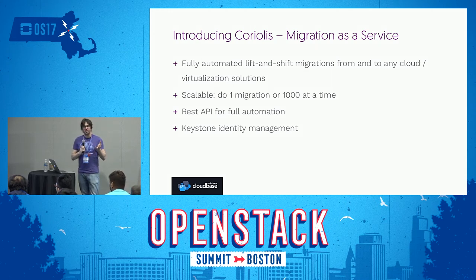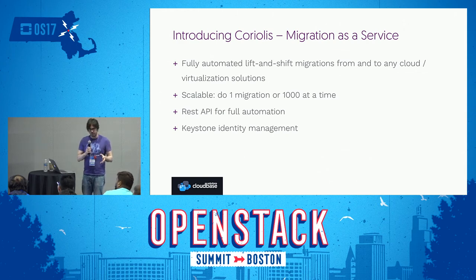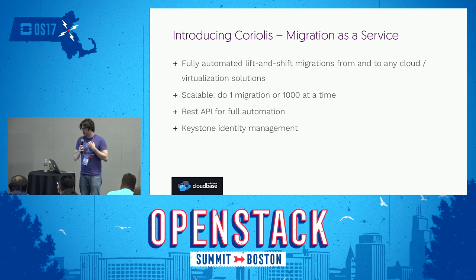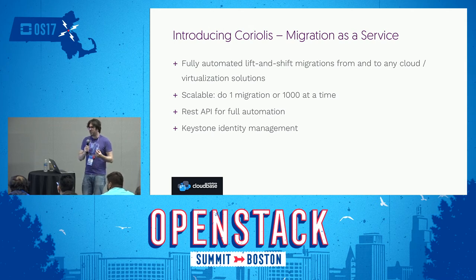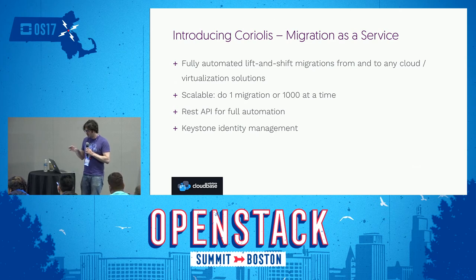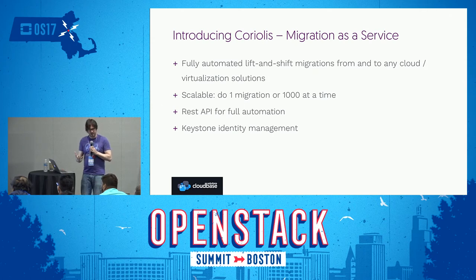Coriolis is the project we built for that. It's called Migration as a Service. It's a fully automated lift-and-shift migration solution from and to any cloud or virtualization solution - not limited only to VMware and OpenStack. It's designed to be scalable, so doing one migration or 1,000 at the same time really doesn't matter. It has a full REST API for automation so it looks and feels like an OpenStack service, and it uses Keystone identity management for users and tenants.